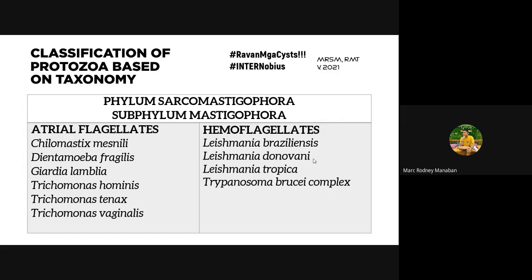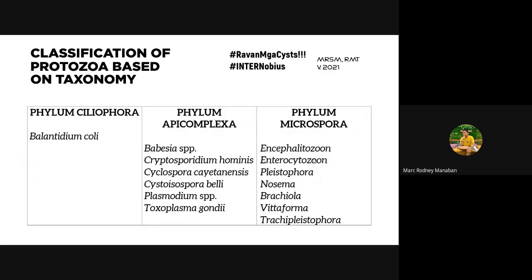Phylum Ciliophora contains Balantidium coli. Phylum Apicomplexa contains your sporozoans — Babesia, Cryptosporidium, Cyclospora, Cystoisospora, Plasmodium, and Toxoplasma. And your intestinal microsporidians under Phylum Microspora include Encephalitozoon, Enterocytozoon, Pleistophora, Nosema, Brachiola, Vittaforma, and Trichoplistophora.